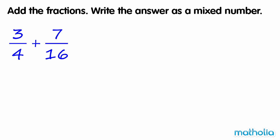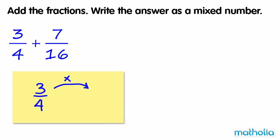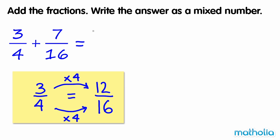Add the fractions. Write the answer as a mixed number. We need to add three-quarters and seven-sixteenths. Let's find an equivalent fraction of three-quarters where the denominator is sixteen. Three-quarters is equal to twelve-sixteenths. So we can rewrite the equation as twelve-sixteenths plus seven-sixteenths.